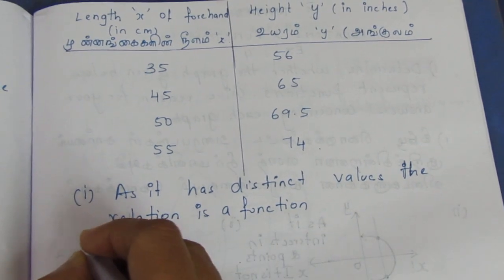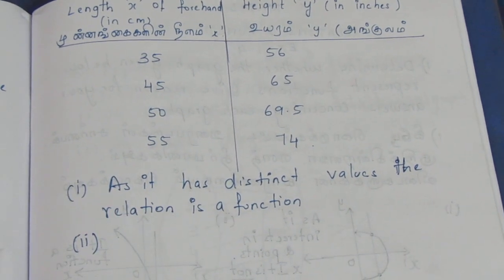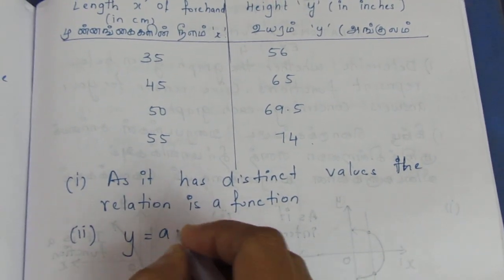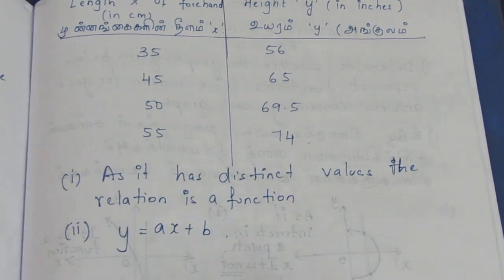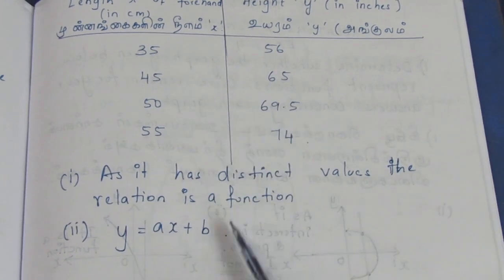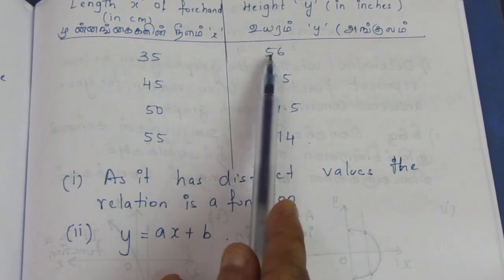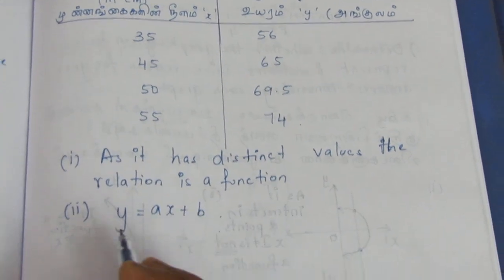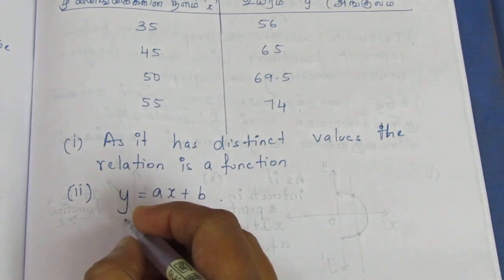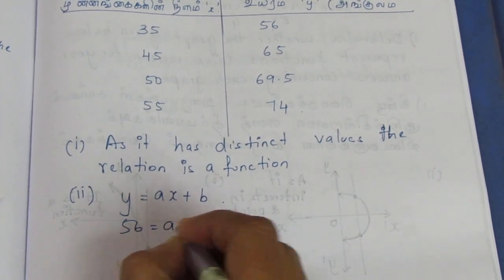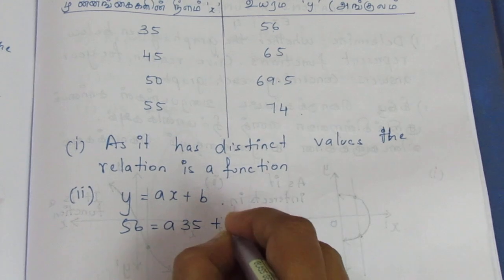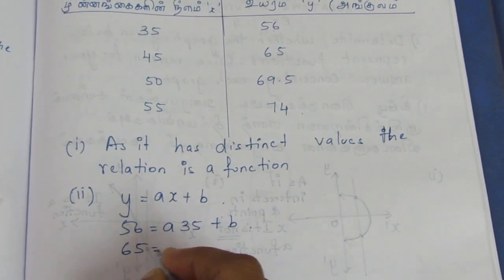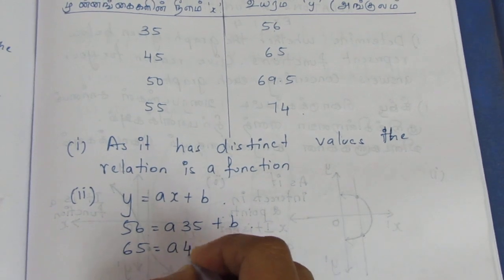The second part is to find a and b. We write the equation y equals ax plus b. You can substitute any two data points. If you know x and y values from the table, you can write: 56 equals a into 35 plus b, and 65 equals a into 45 plus b.